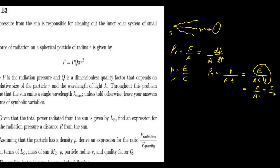Power per unit area is intensity, so finally we get the radiation pressure formula: P_R = I/C. From the question, the total power radiated from the sun is given by L_solar. We need to find an expression for the radiation pressure at a distance R from the sun.